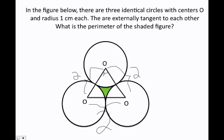Because this is an equilateral triangle, each interior angle is 60 degrees. Now I remember that if I have the radius, which is 1, and I know the degree between the two radii is 60 degrees, I can figure out the arc of the circle — just this little piece. If I find this piece, plus this piece, plus this piece, that gives me the perimeter of the shaded figure.